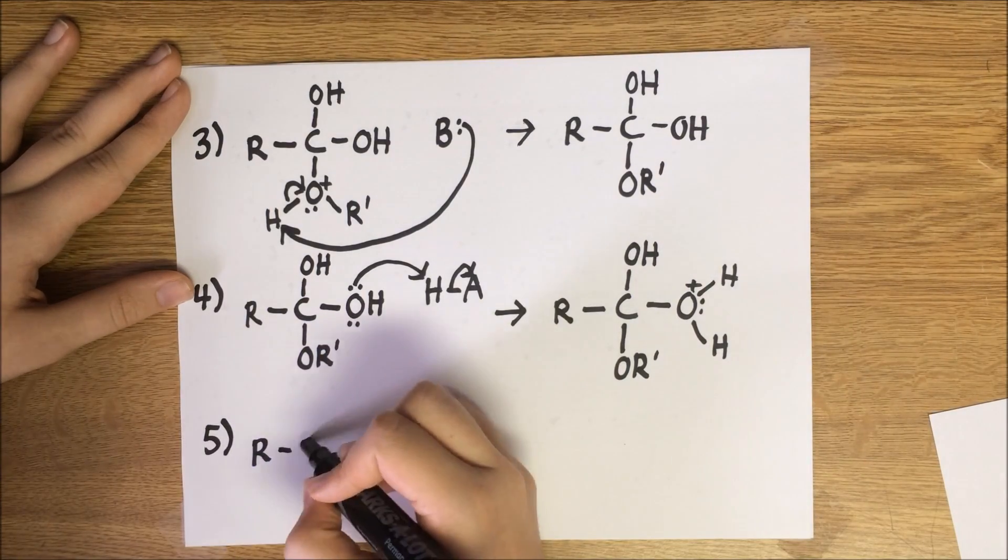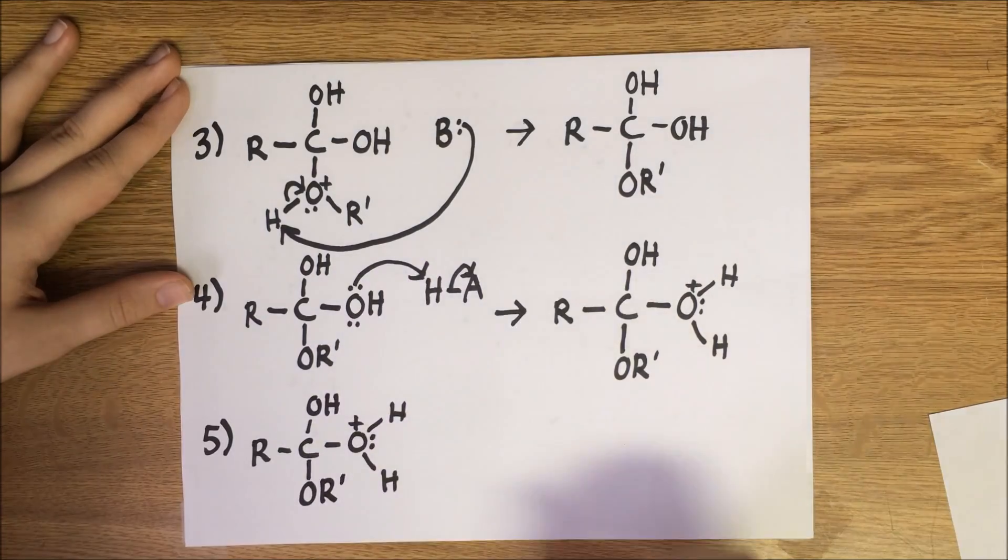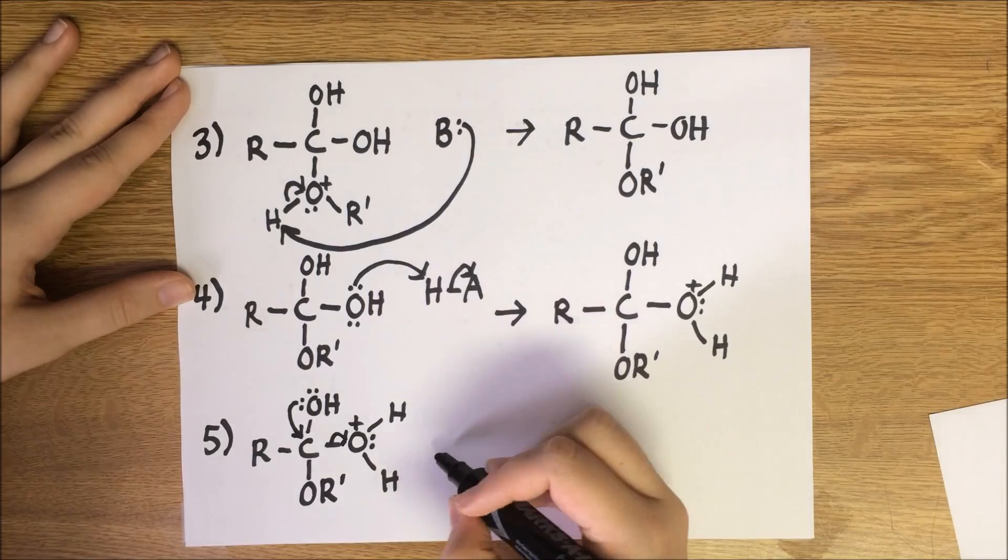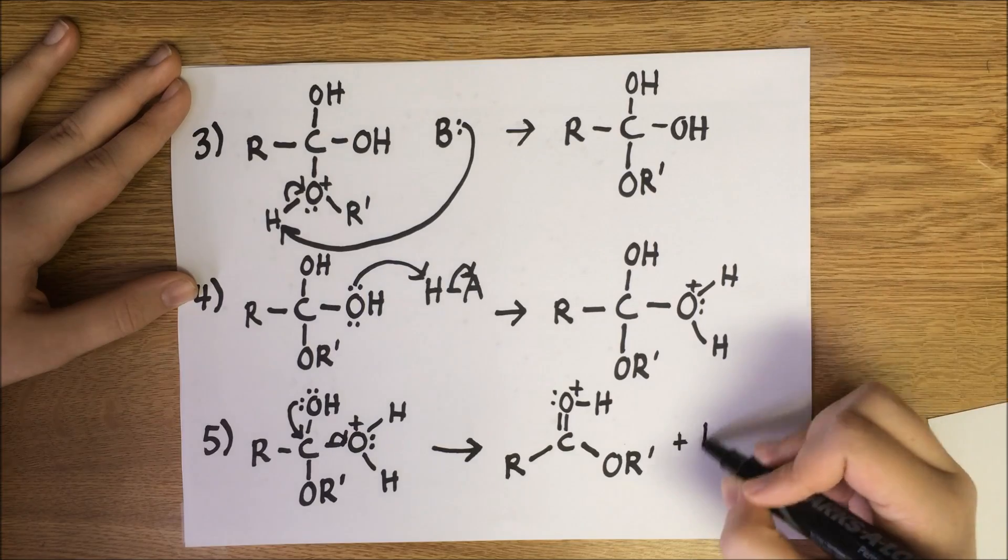In step 5, the oxonium ion makes a great leaving group as water. A pair of electrons from the remaining alcohol oxygen form a double bond with the carbon to help push off the leaving group as neutral water.